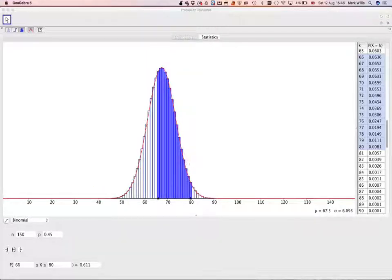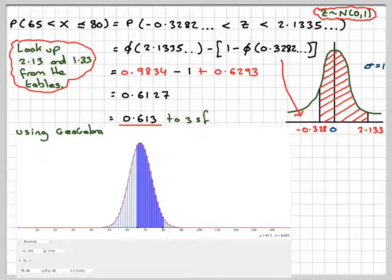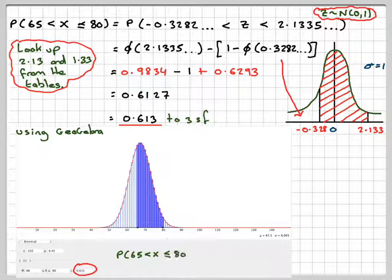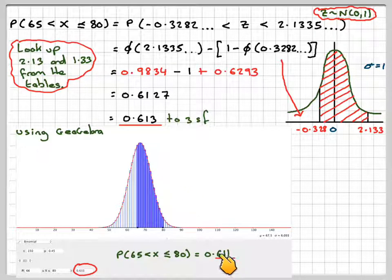You can get the normal curve to go around it by pressing this button here. Using GeoGebra, we get that, and the probability of X greater than 65 but less than or equal to 80 is 0.611. So that's a fairly good approximation. We do get agreement to two significant figures. This has been a video to show you how to use the normal approximation to the binomial with large n and p close to 0.5. I hope you've understood, and I thank you very much for watching.